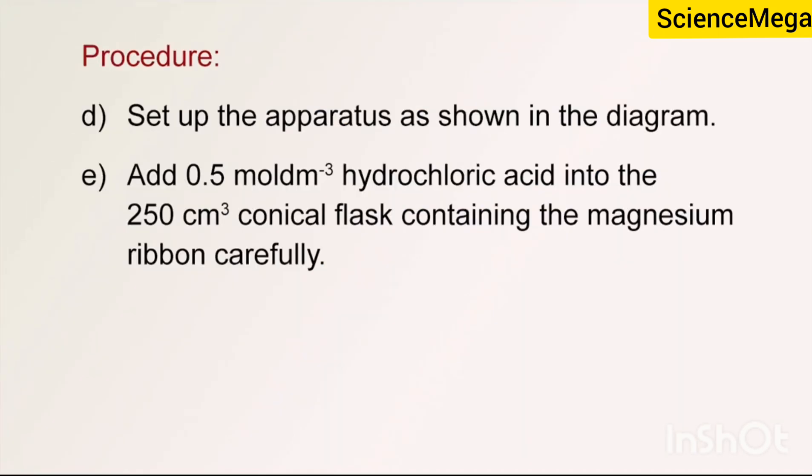Add about 0.5 mole per cubic decimeter hydrochloric acid into the 250 cubic centimeter conical flask containing the magnesium ribbon, carefully.